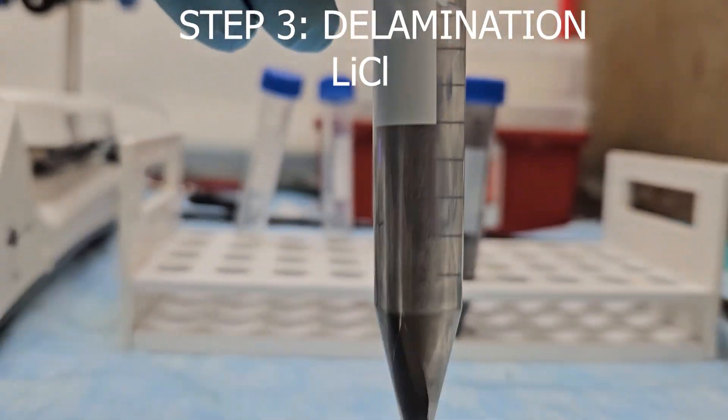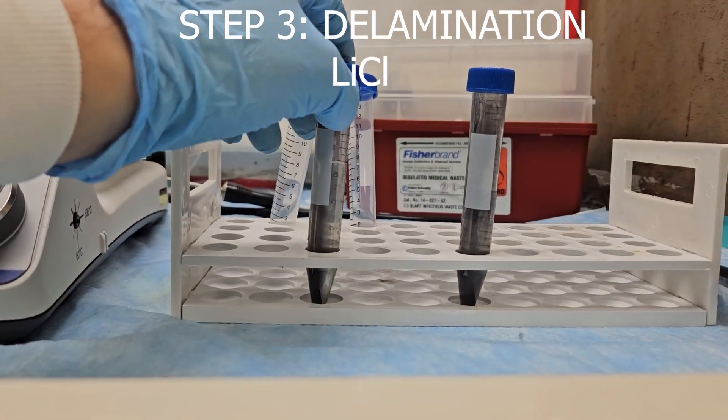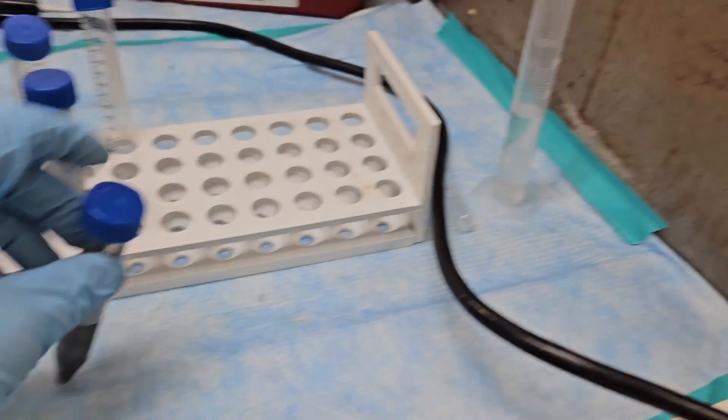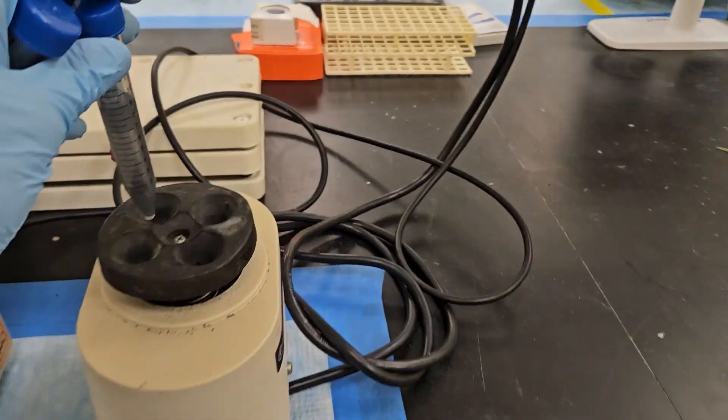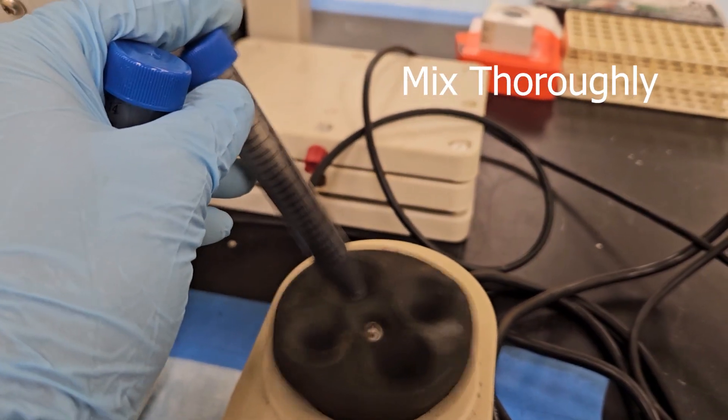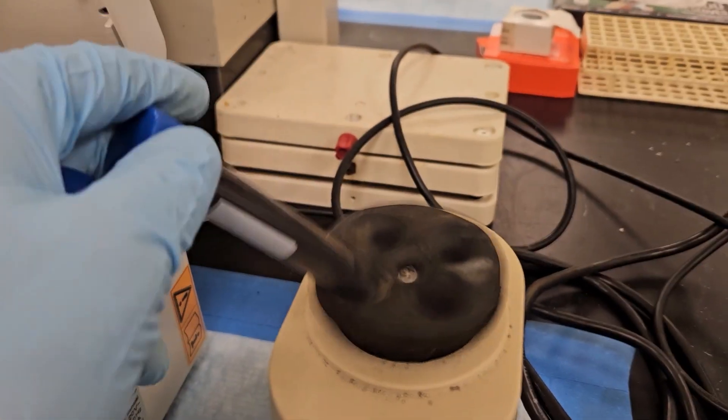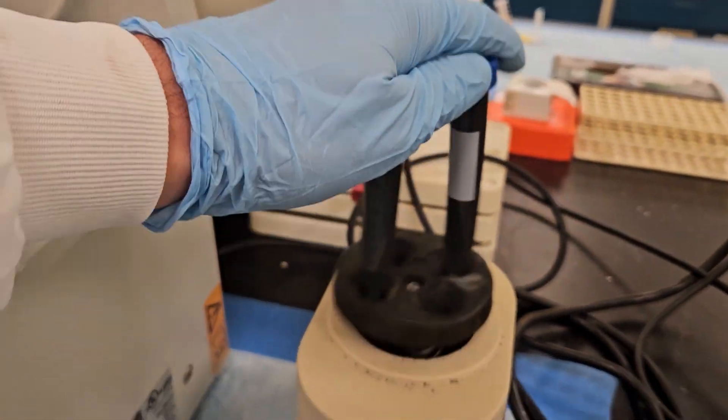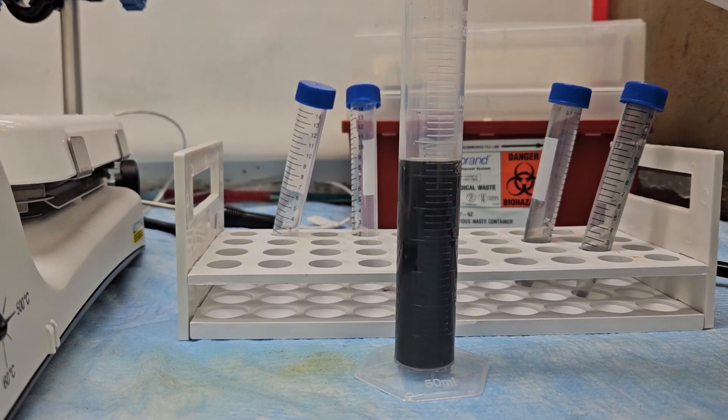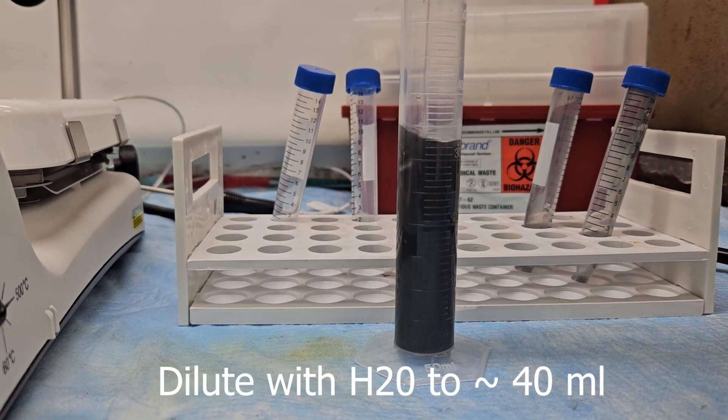In our final step, we will be separating our multi-layer MXene into single-layer MXene flake, in a process known as delamination. After redistributing our multi-layer MXene flake in water, we will transfer the contents of our centrifuge tubes to a plastic beaker, and then diluting up to 40 milliliters.